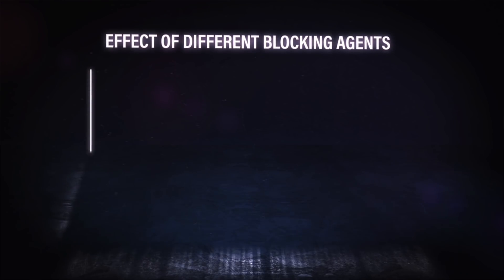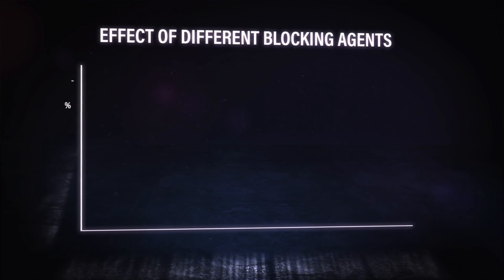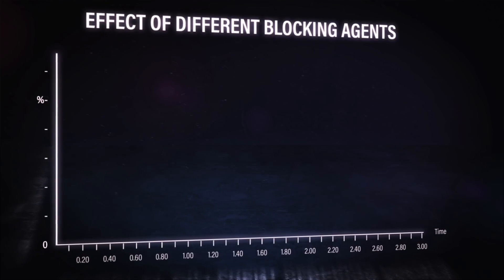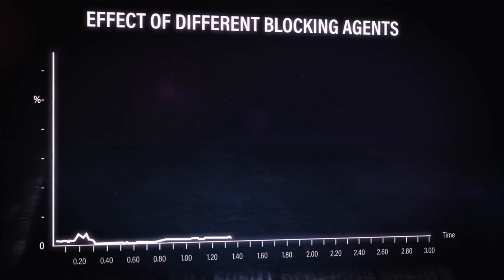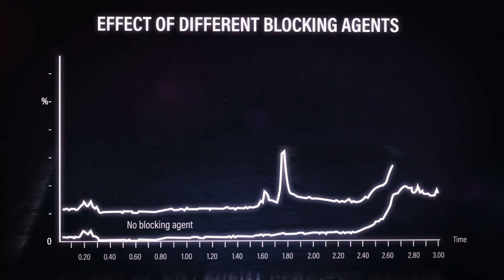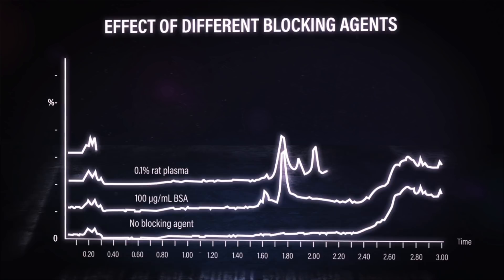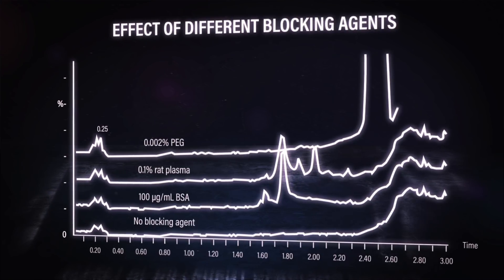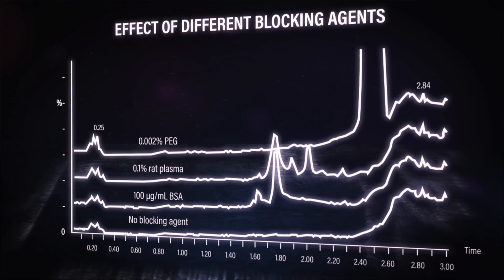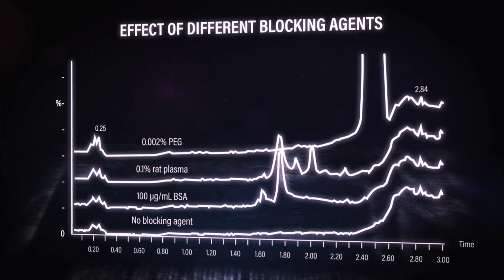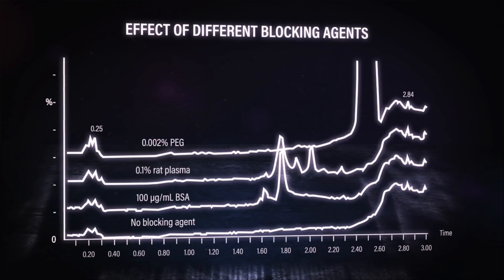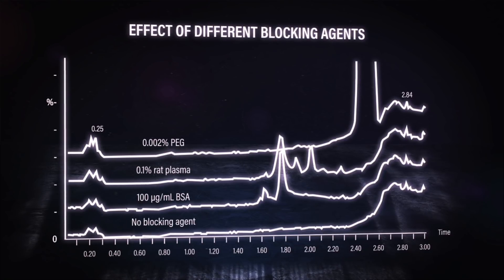We ran some experiments. I took a clean eluent and spiked in some protein and even a surfactant just to see how the background changes. From these four scans, you can see with no blocking agent, not much in there — looks pretty clean, that's what you want. But when you start doping stuff in there like BSA, rat plasma, or polyethylene glycol, you start to see a bunch of extra peaks. That is not good, because usually when you're doing this type of analysis you're trying to concentrate your sample and see low levels. Adding these things definitely adds extra interference to your chromatography and your mass spec.